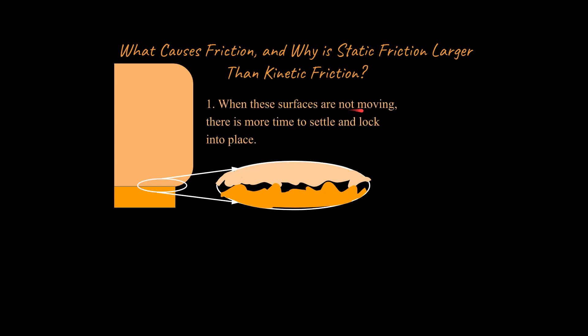And so when these surfaces are not moving, there is more time to settle and to lock into place. So the hills of one side can kind of fill in valleys of another side occasionally, a little bit more than if they were just sliding past each other, because the hills of both sides in those cases are just bouncing off each other if you're in constant motion.